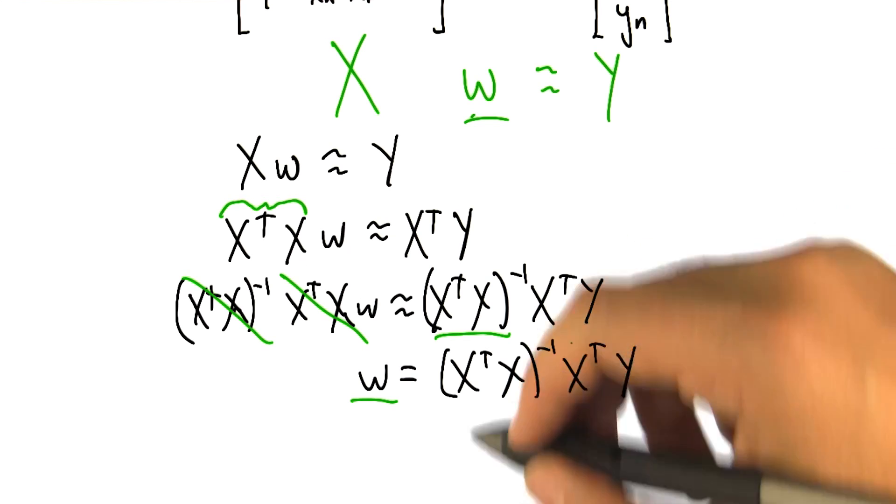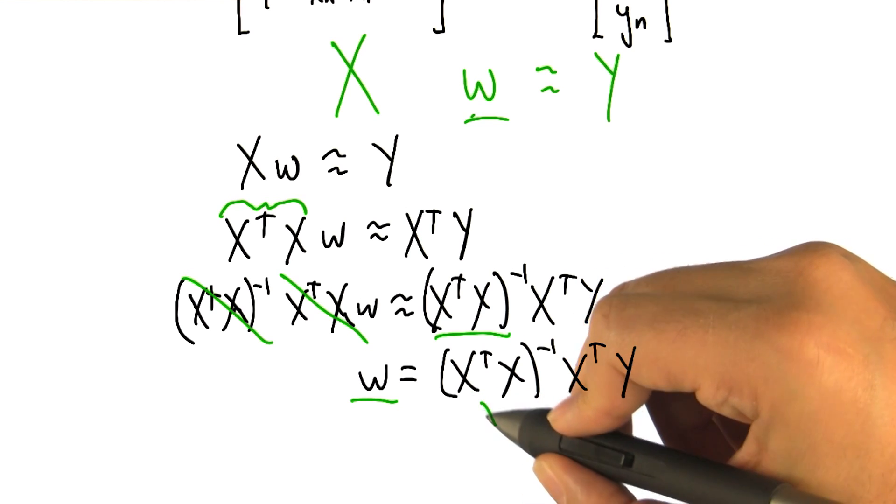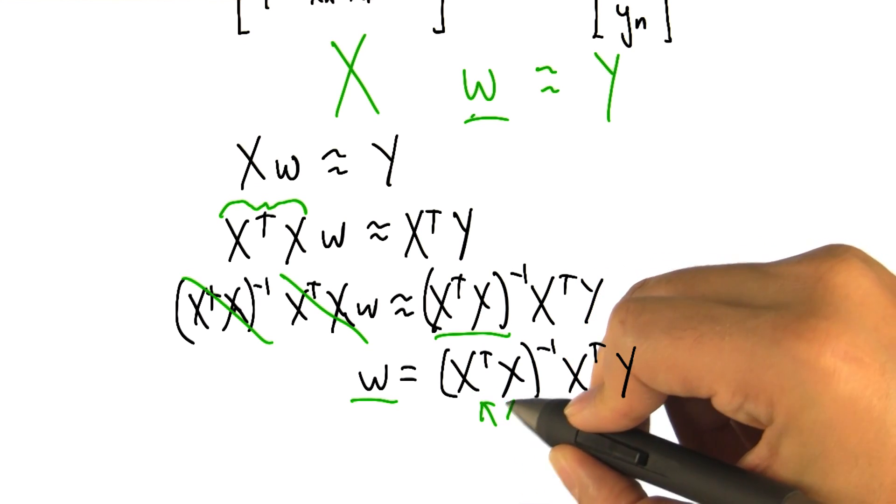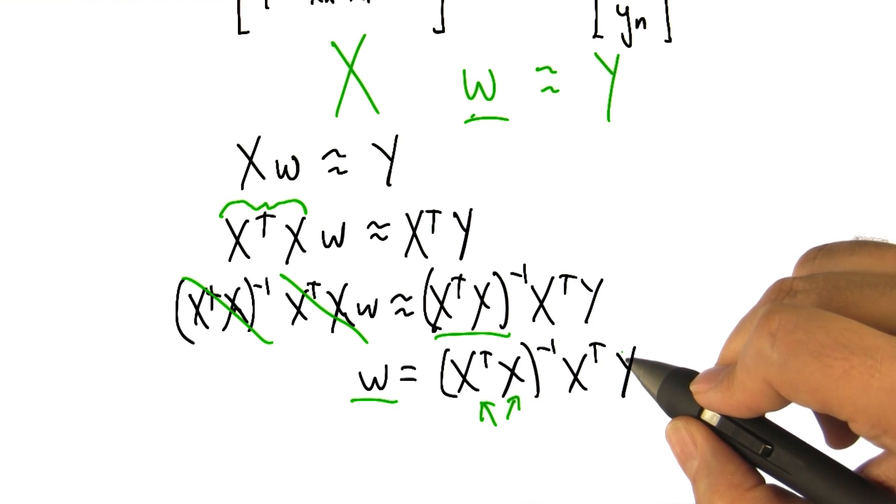But, most importantly, the whole process is just we take the data, we arrange it into this matrix with whatever sort of powers that we care about. And then we just compute this quantity and we're good to go.